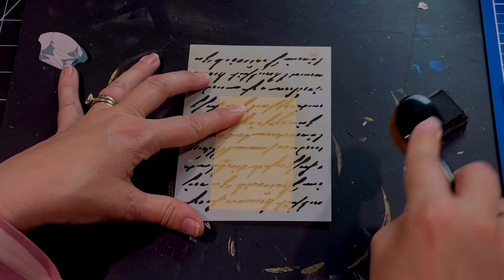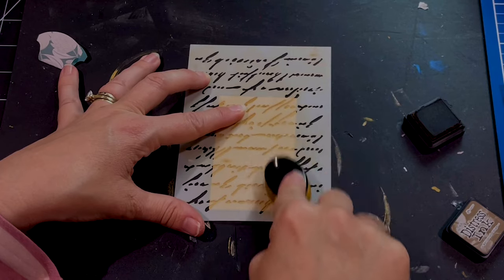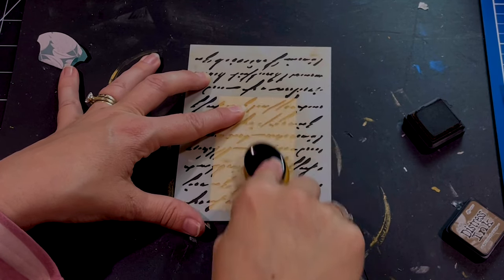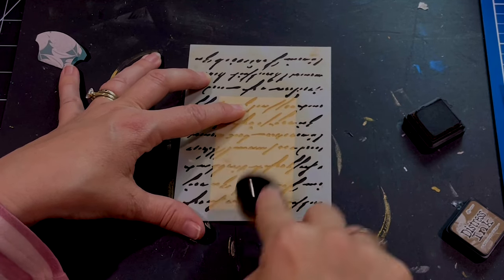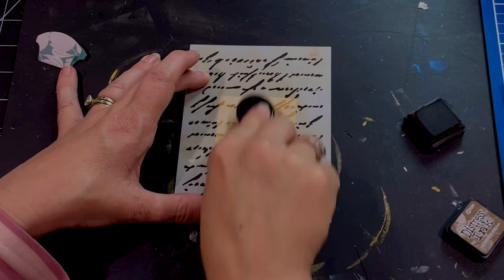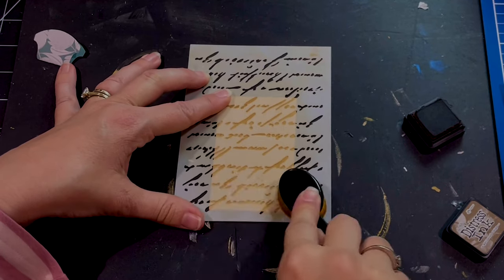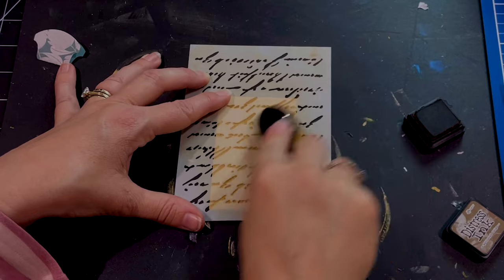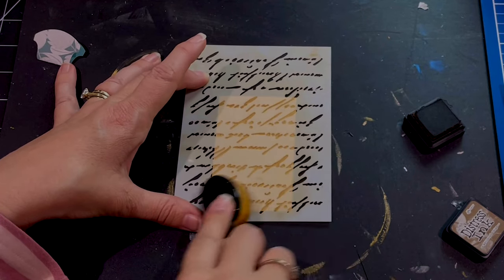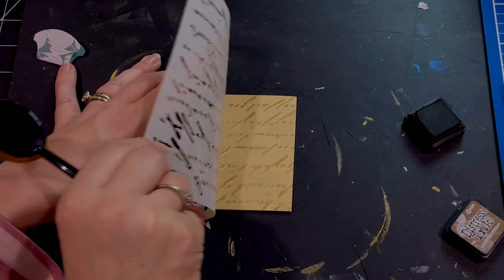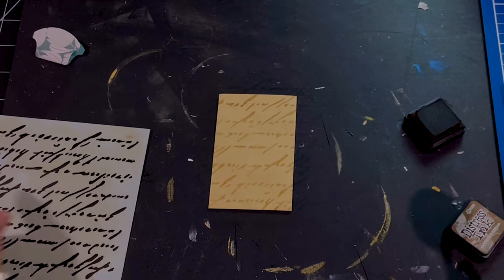Now I'm just rubbing over with this stencil to make a little bit of a pattern on the top and I believe that's Gathered Twigs that I'm using there. I love these brushes for actually blending through stencils. I think that they work better than the daubers. So there we go. Isn't that cute?